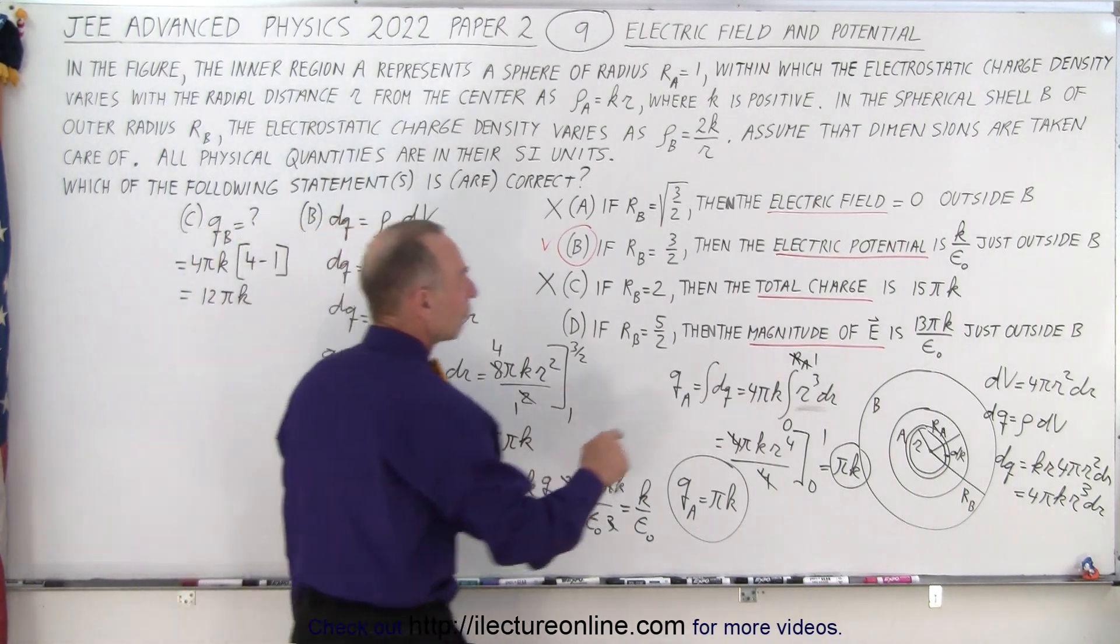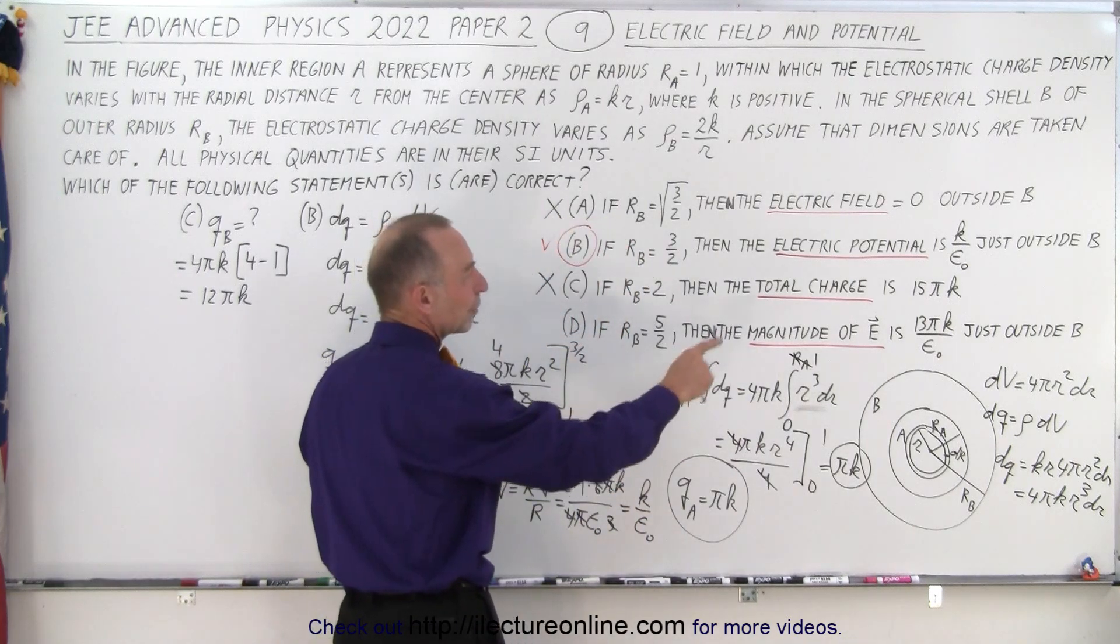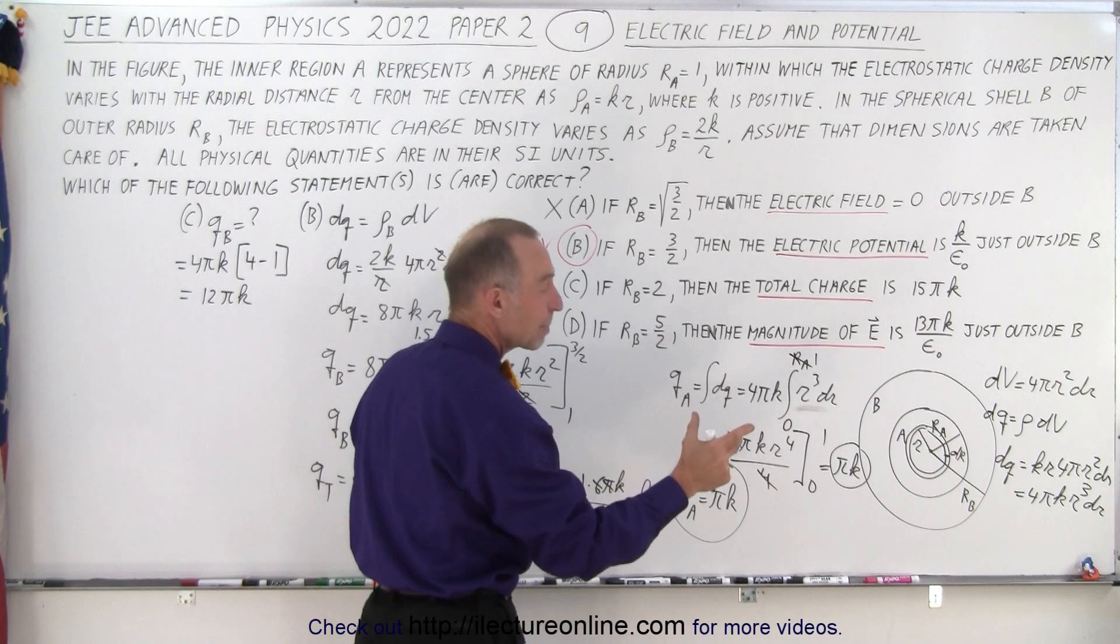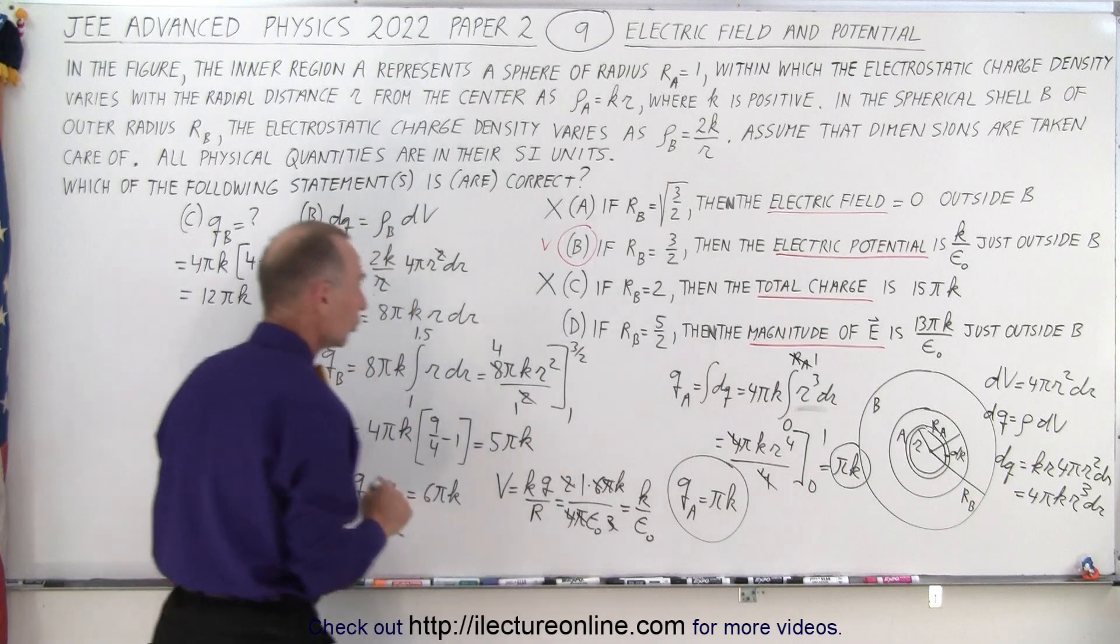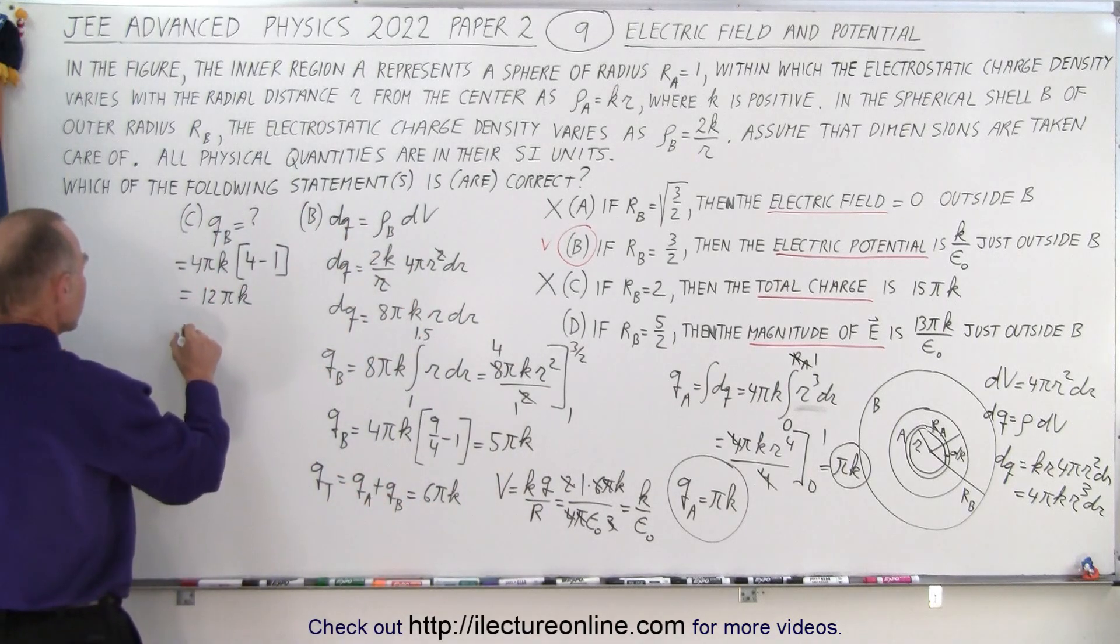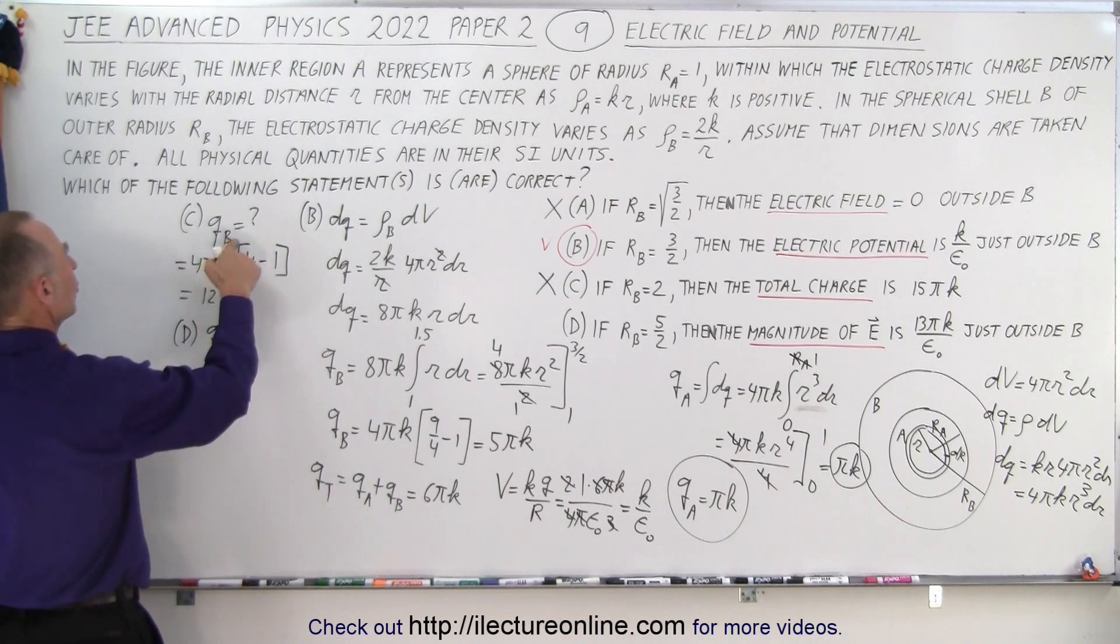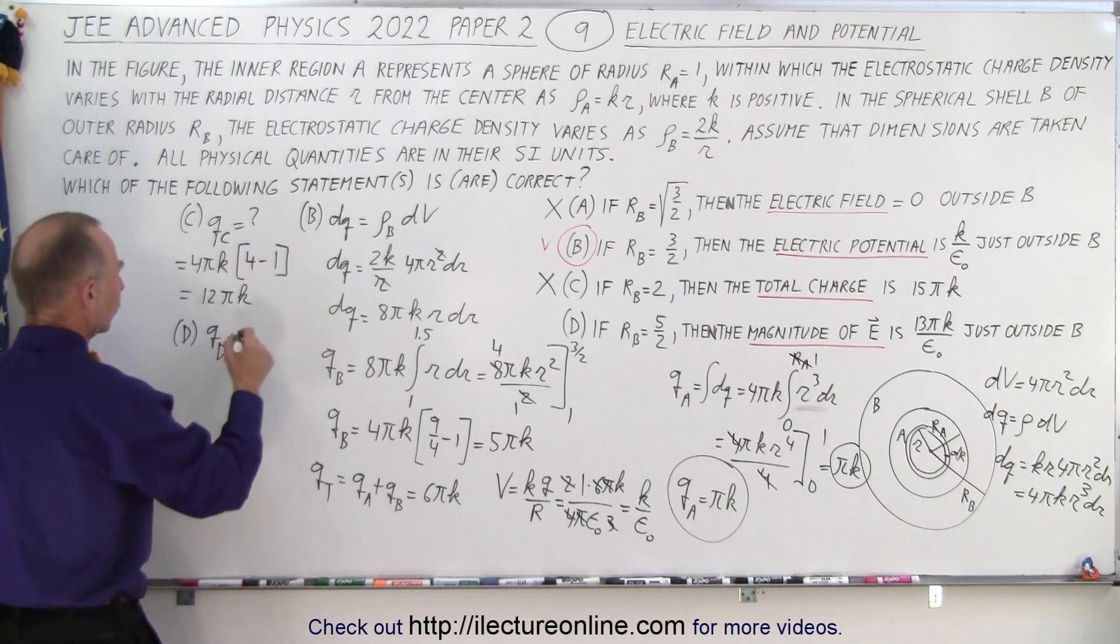And now finally, then the magnitude of the electric field is 13 pi k over epsilon sub naut, just outside B. Again, we need to find the entire charge, and now we have the limits of 5 over 2. So that means for part D, we need to find q. And so for qD.